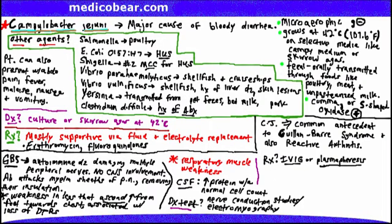The weakness is ascending and also symmetric, so the question stem should describe symmetric weakness affecting both legs ascending upward. Dysarthria and dysphagia can also be seen in the clinical vignette. Don't forget about respiratory compromise affecting the diaphragm, especially if it follows a prior respiratory or GI infection as seen in Campylobacter jejuni.